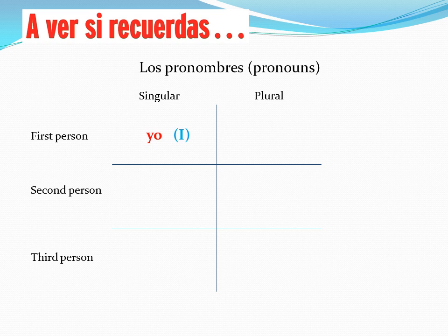Moving on to the second person, we have tú. Tú is 'you,' familiar — so a friend, family, someone you're familiar with. Tú, with an accent over the U.